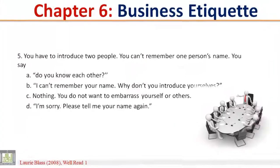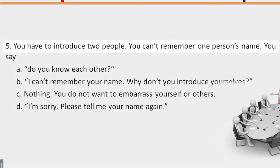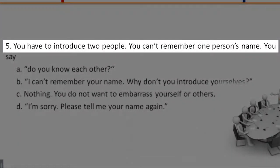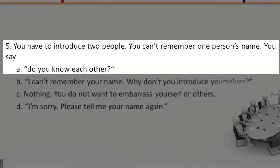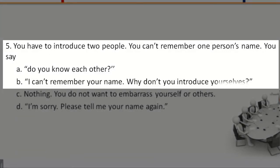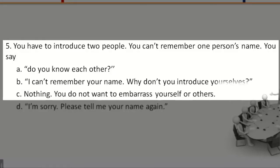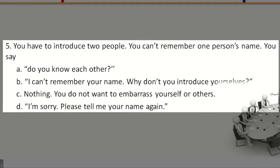5. You have to introduce two people. You can't remember one person's name. You say: A. Do you know each other? B. I can't remember your name. Why don't you introduce yourselves? C. Nothing. You don't want to embarrass yourself or others. D. I'm sorry. Please tell me your name again.